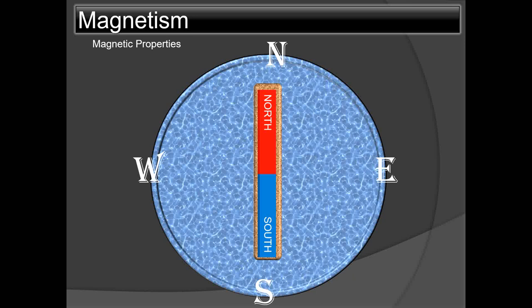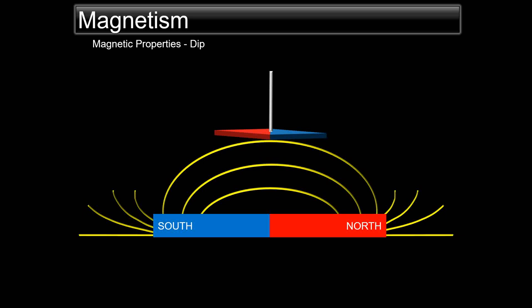The north end is colored red and the south end is colored blue. The magnetic needle, if suspended freely, aligns itself with the magnetic lines of force. There is a property of a magnetic needle called dip — also called magnetic inclination — which is the angle made by a compass needle with the horizontal at any point on the Earth's surface. Positive values of the inclination or dip indicate that the field is pointing downwards into the Earth at the point of measurement.